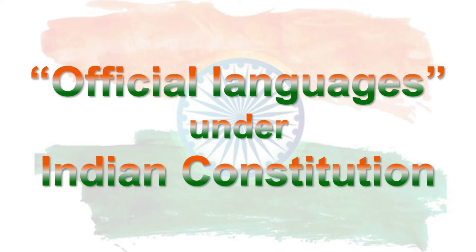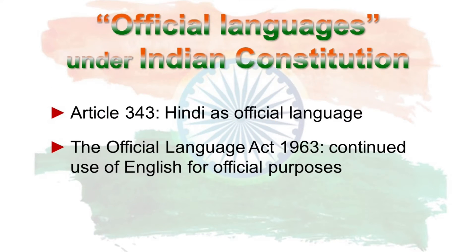According to Article 343 of our constitution, the official language of the union shall be Hindi in Devanagari script, but the form of numerals to be used shall be the international form of Indian numerals. Originally it was also prescribed that for a period of 15 years from the commencement of the constitution, the English language shall continue to be used for all the official purposes of the union.